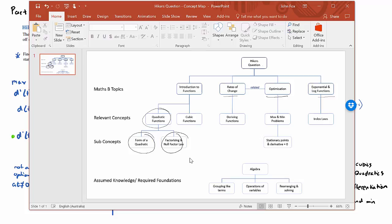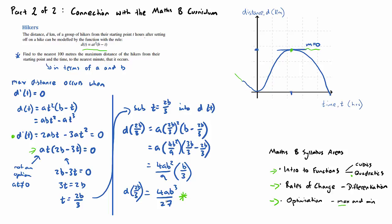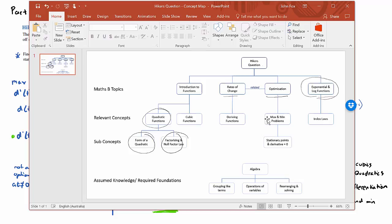I do have a fourth one here. It's a bit of assumed knowledge. I haven't put it as a core concept. It's understanding index laws. As you can see in our question back here, when we get to actually finding this maximum distance term down here, it does involve some index laws. So for example, here we have a fraction to the power of two and just the knowledge that you need to square both terms of the numerator and the denominator. And then also when b squared multiplies with b on three, it becomes b cubed. So there is some index laws in there as well.